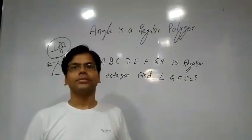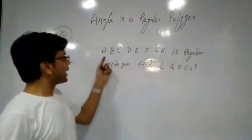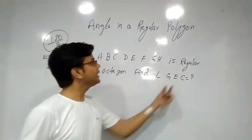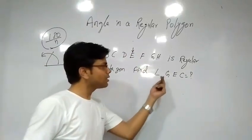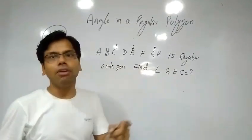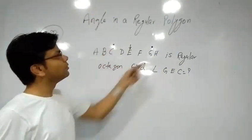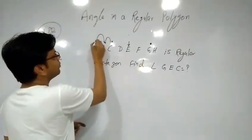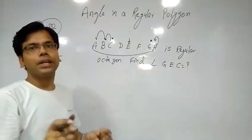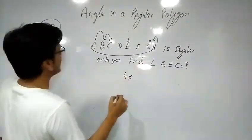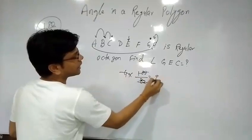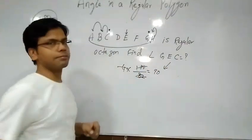Now let's solve another question. A, B, C, D, E, F, G, H is a regular octagon. Find angle G-E-C. The middle point is E. The other vertices are G and C. G is one point, C is the other. We measure anticlockwise, starting from C and moving to G: 1 step, 2 steps, 3 steps, 4 steps. So 4 steps move. The gap is 4. The angle is 4 into 180 upon n. Here n is 8 because it is an 8-sided figure. So 4 into 180 by 8 equals 90 degrees. Angle GEC is 90 degrees. I hope it is clear.